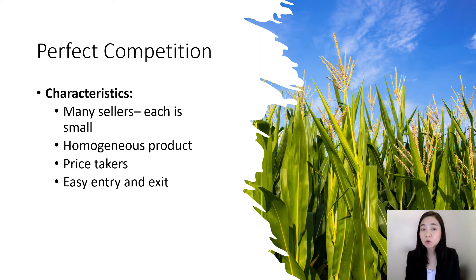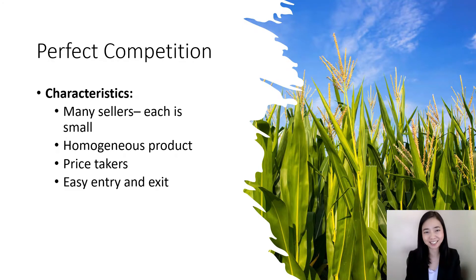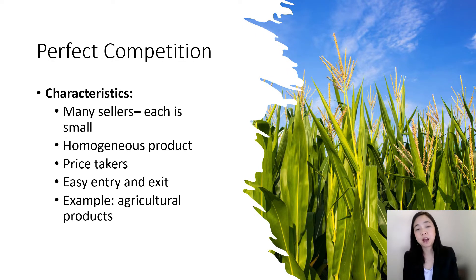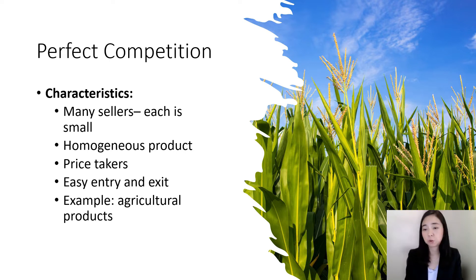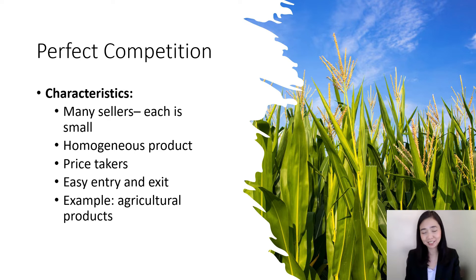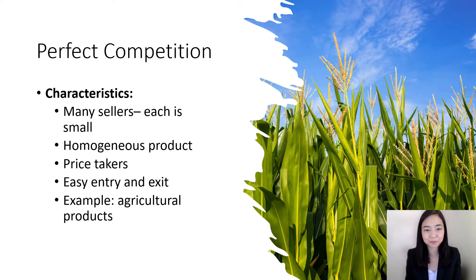The reason why we have so many sellers is that it is easy to enter and exit the market. One example is agricultural products. If you want to sell agricultural products, you need a piece of land and some seeds — so it is easy to enter. It is also easy to exit because you can just sell the land and say goodbye to the industry. These are some characteristics of a perfectly competitive market.